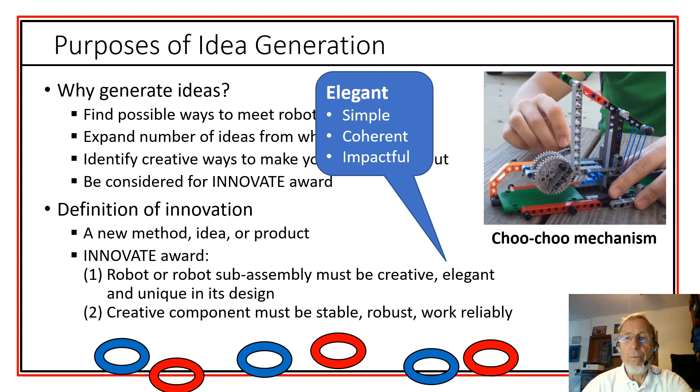An example from our teams of previous years was the choo-choo mechanism used to launch balls rapidly with accurate launching trajectory. Turning the crank here would cock the launcher and then it would suddenly release it giving that repeatable performance. It was an innovation that many other teams copied so they saw the value of it. It worked well. It's reliable and robust. It met these criteria.